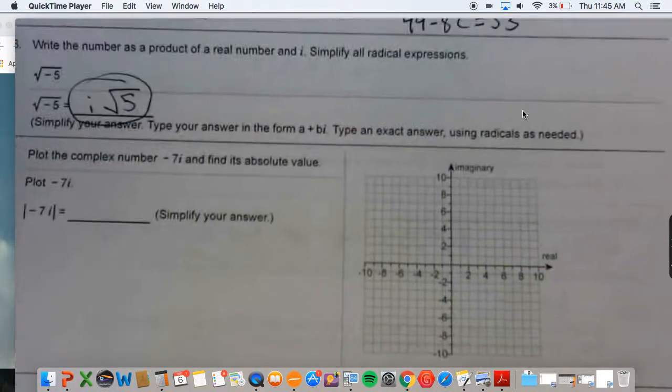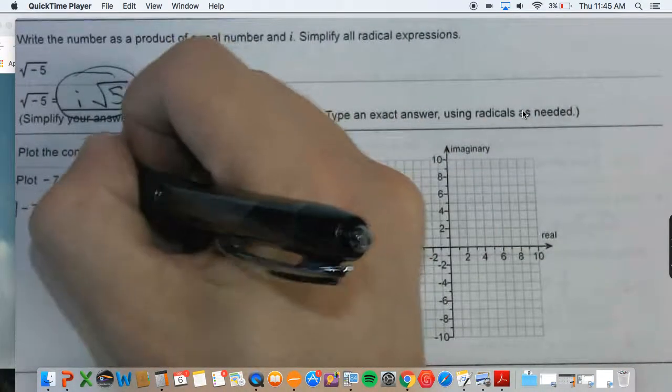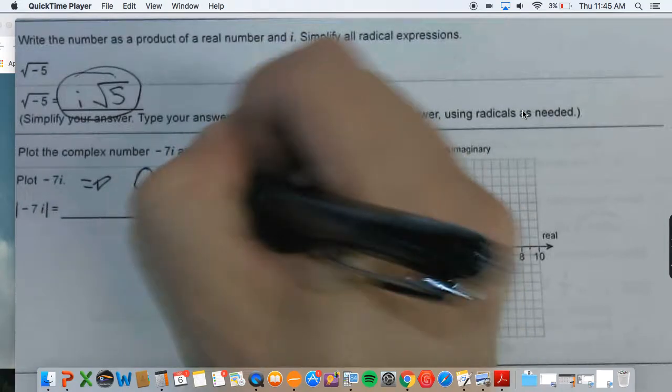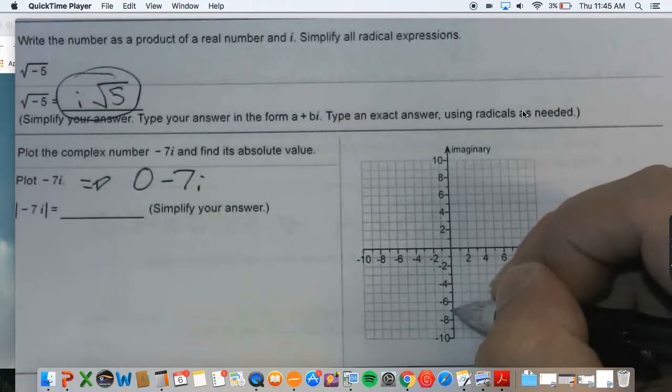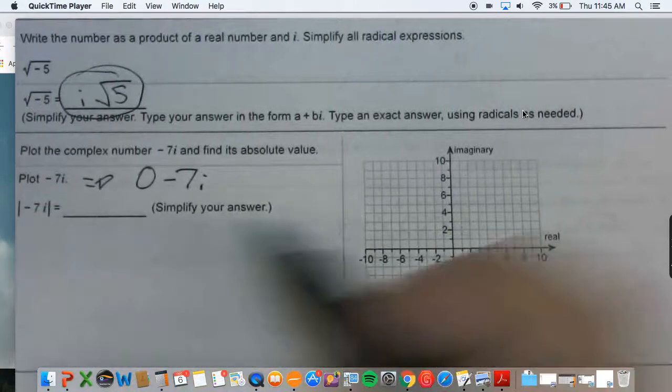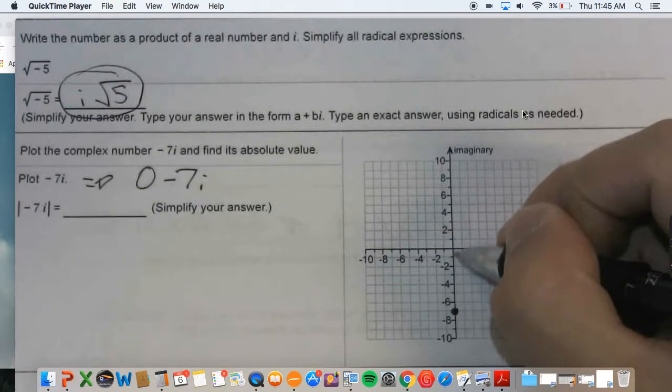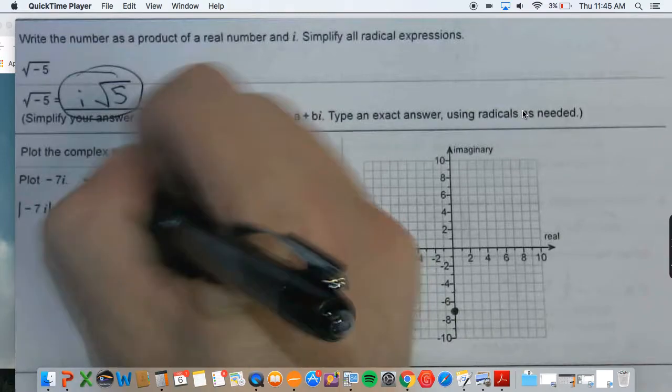You're then going and plotting negative 7i. So this is just 0 in the real direction. So you could rewrite this as 0 minus 7i. So nowhere in the real direction, just down 7. The absolute value is just showing the distance. So really, if you're starting at the origin, you're just moving 7 spaces down. So this is it. Done. It's an easy one.